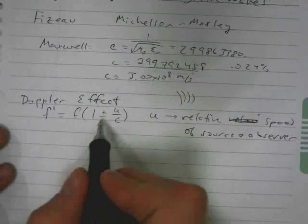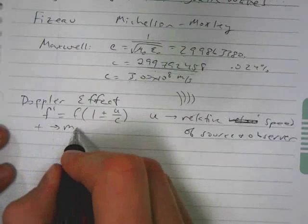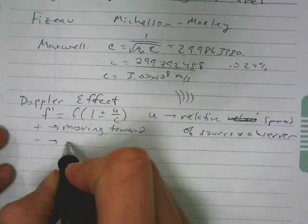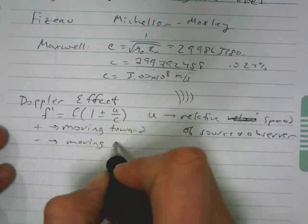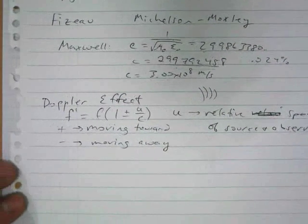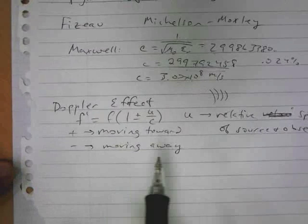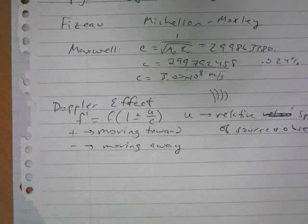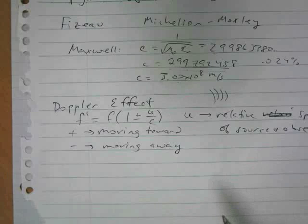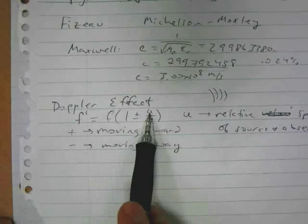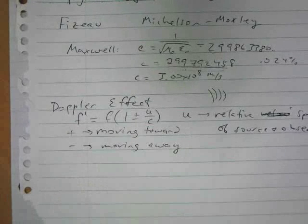The plus means that they're moving toward one another, and the minus means they're moving away from one another. Whereas for the Doppler effect with sound, we had a pair of plus or minuses, and it depended on whether the source was moving toward the observer or the observer was moving toward the source. But for light, because of the fact that light doesn't change speed in different reference frames, you only have to worry about what their velocity is relative to one another.